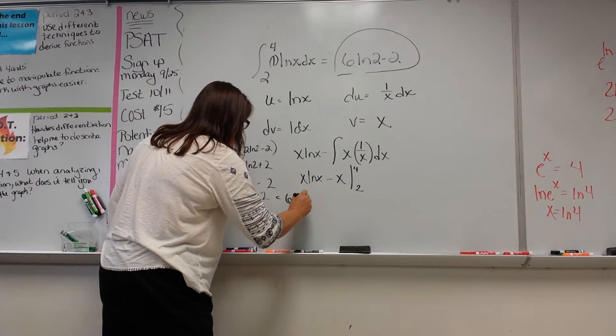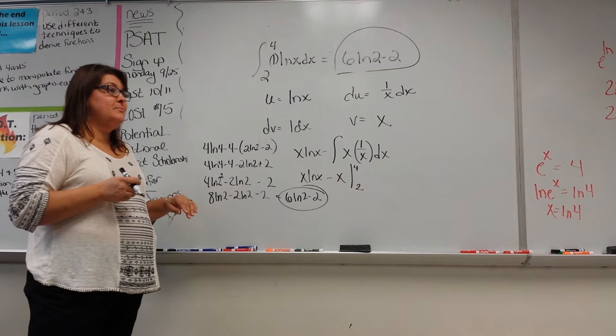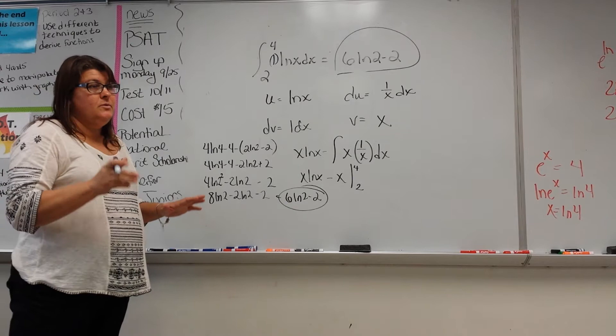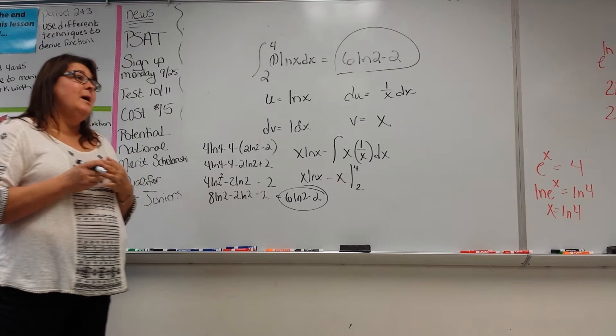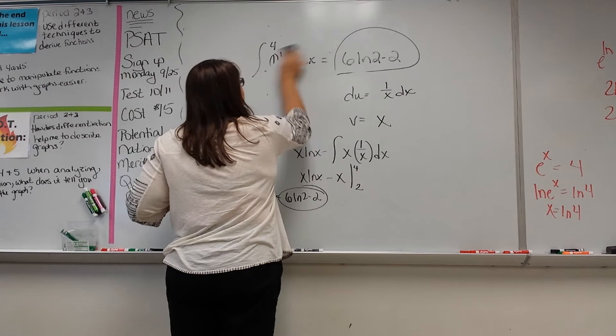So the final answer is 6 ln(2) minus 2. Student confirms: you have 8 of those minus 2 ln(2), giving 6 ln(2) minus 2. Teacher notes the upcoming test will have a mix of topics: product rule, differentiation, and regular integration — not just integration by parts. It's all on video.